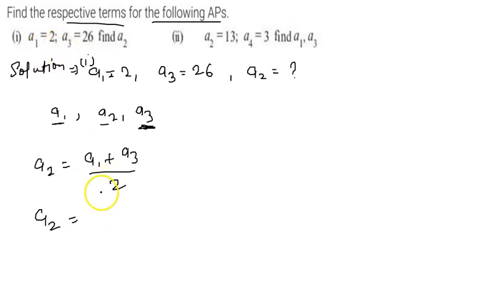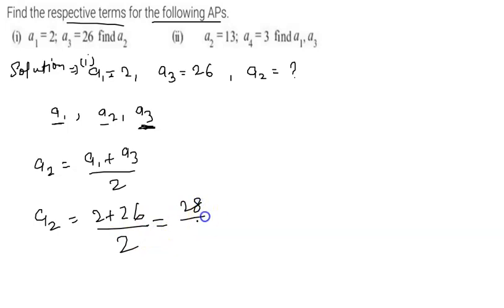So a2 is equal to (2 + 26) divided by 2, which gives us 28 divided by 2, which equals 14. So the second term is 14.